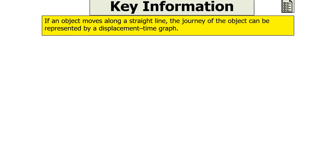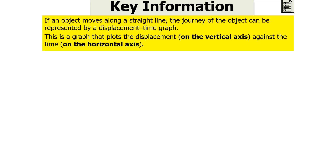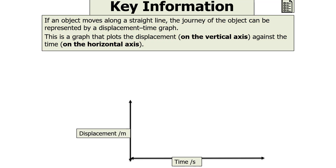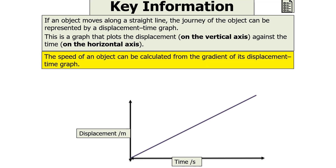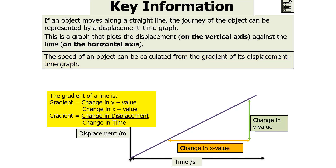If an object moves along a straight line, then the journey of an object can be represented by a displacement time graph. This is a graph that plots the displacement on the vertical axis against the time on the horizontal axis as shown below. The speed of an object can be calculated from the gradient of its displacement time graph, because the gradient of a line is the change in y over the change in x — which in this instance is the change in displacement over the change in time, which is the speed.